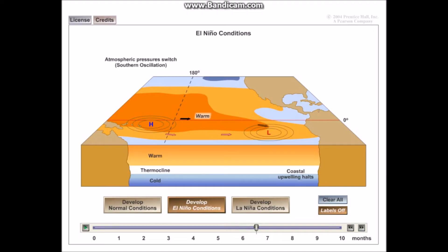So the Walker Cell that previously existed under normal conditions completely broke down and as you can see the high and the low pressure has now reversed. High pressure is found over the coast of Southeast Asia rather than the coast of South America. And what this causes is it causes the precipitation to occur and the low pressure to occur off the coast of South America and it causes the high pressure and lack of rainfall to occur off the coast of Southeast Asia.